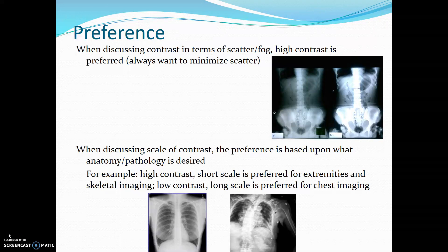When discussing contrast in terms of scatter and fog, high contrast is preferred because we always want to minimize scatter. When discussing scale of contrast, the preference is based upon what anatomy or pathology is desired.